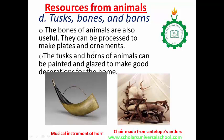The bones and horns of animals are also useful. They can be processed to make plates and ornaments. The tusks and horns of animals can be painted and glazed to make good decorations. The tusks of elephants are used to produce musical instruments. This chair is gotten from the antelope's antlers and is used for decoration.